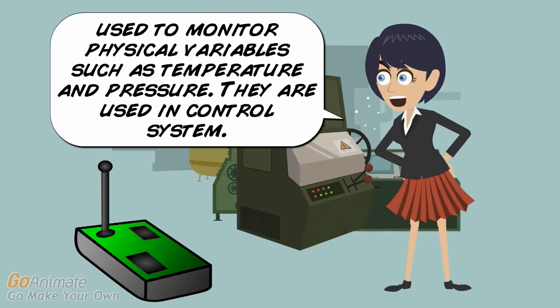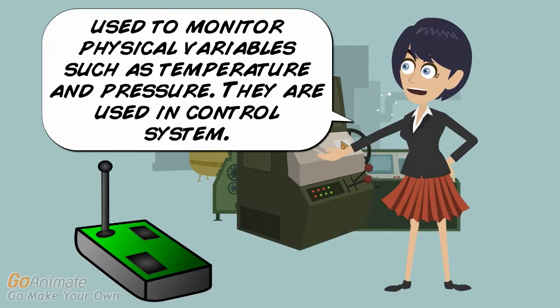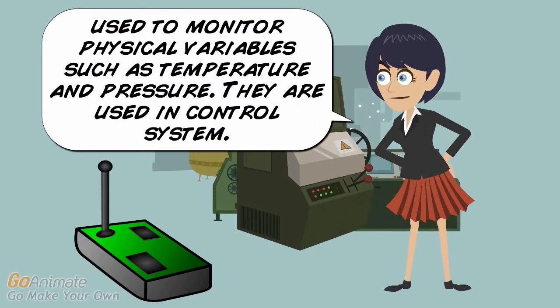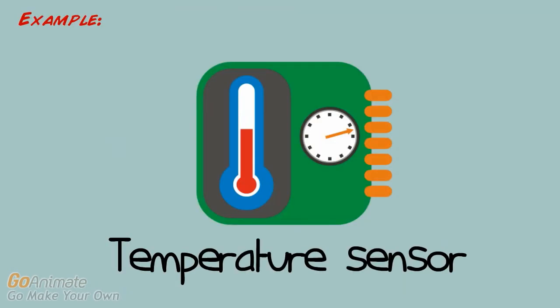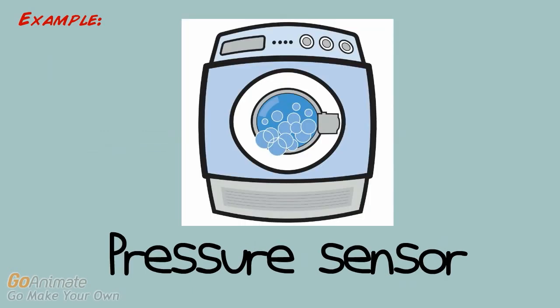Sensors. Sensors used to monitor physical variables such as temperature and pressure. They are used in automated systems. For example, the temperature sensors or the pressure sensors in washing machine.